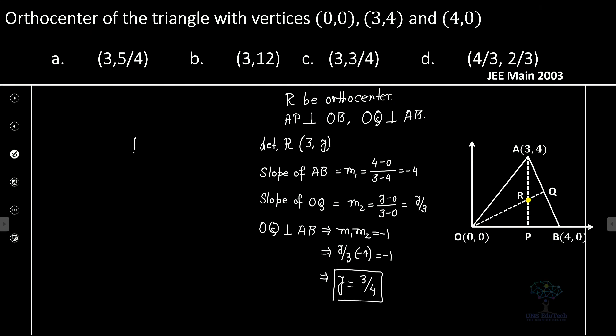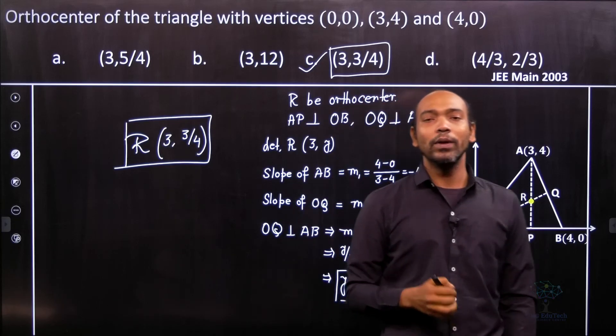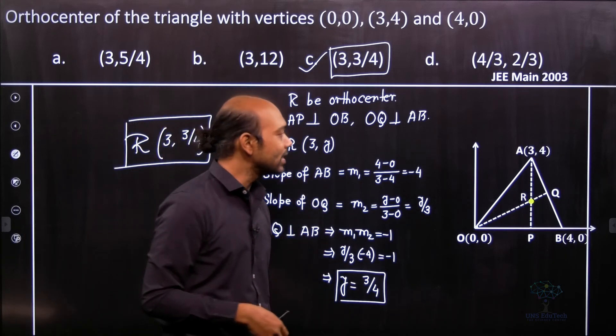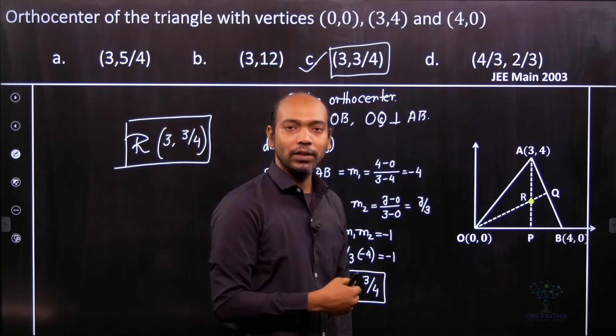And hence the orthocenter for this triangle R will be definitely 3 comma 3 by 4. And hence you will see that option C is the correct answer. So that's it. So that's the way we need to calculate. Obviously the orthocenter, we will see other cases, but orthocenter for this case.